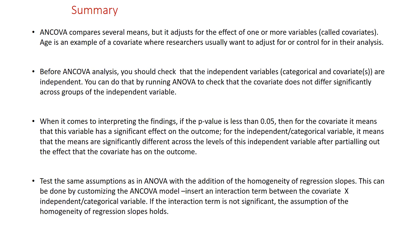When it comes to interpreting the findings, if the p-value is less than 0.05, then for the covariate it means that this variable has a significant effect on the outcome. For the independent variable, it means that the means are significantly different across the levels of this independent variable after partialing out the effect that the covariate has on the outcome. We test the same assumptions as in ANOVA with the addition of the homogeneity of regression slopes. This can be done by customizing the ANCOVA model, where we insert an interaction term between the covariate and the categorical independent variable. If the interaction term is not significant, the assumption of homogeneity of regression slope holds.